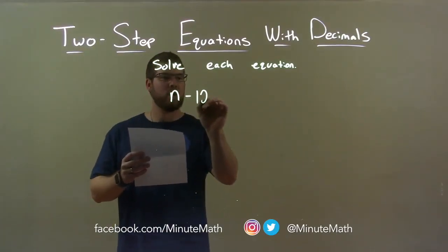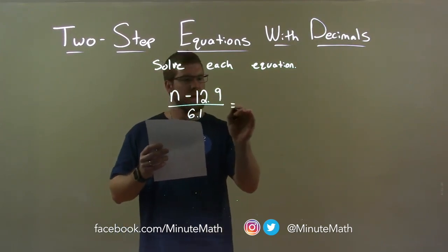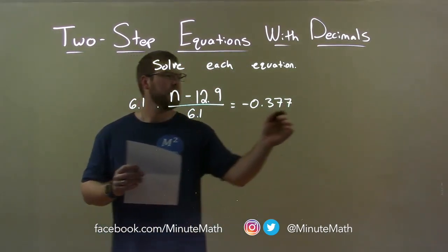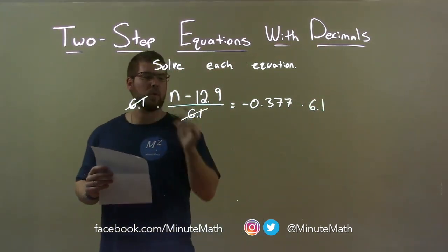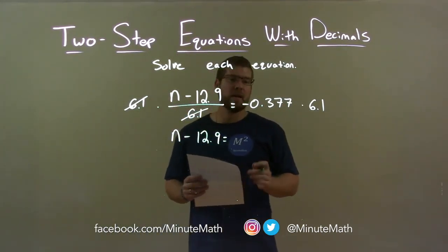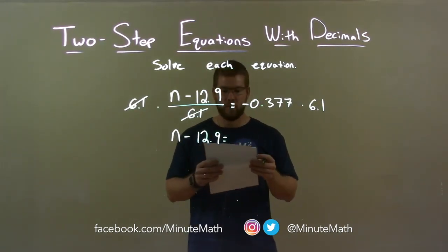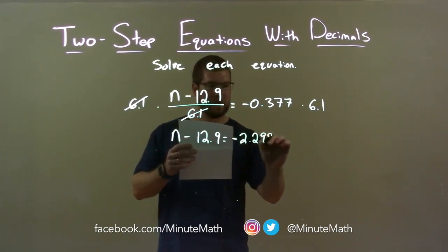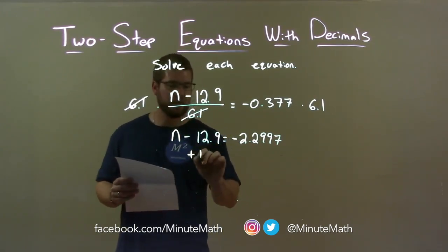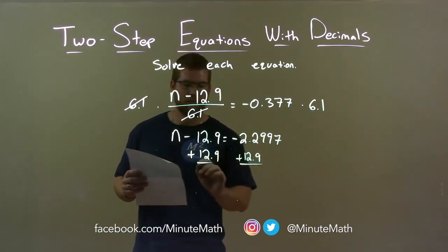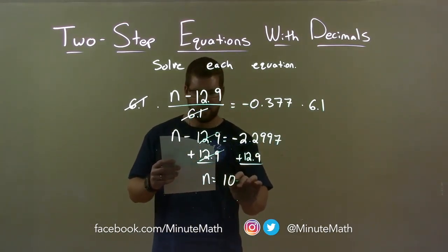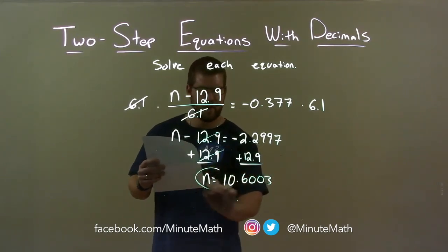n minus 12.9 over 6.1 equals negative 0.377. First thing I want to do is multiply 6.1 to both sides. This eliminates the 6.1 in the denominator, giving me n minus 12.9 left in the numerator. On the right, negative 0.377 times 6.1 comes out to be negative 2.2997. Now I'm subtracting 12.9, so opposite of subtraction is addition. If I add 12.9 to both sides, we're left with n by itself. Negative 2.2997 plus 12.9 is 10.6003. And there we have our final answer.